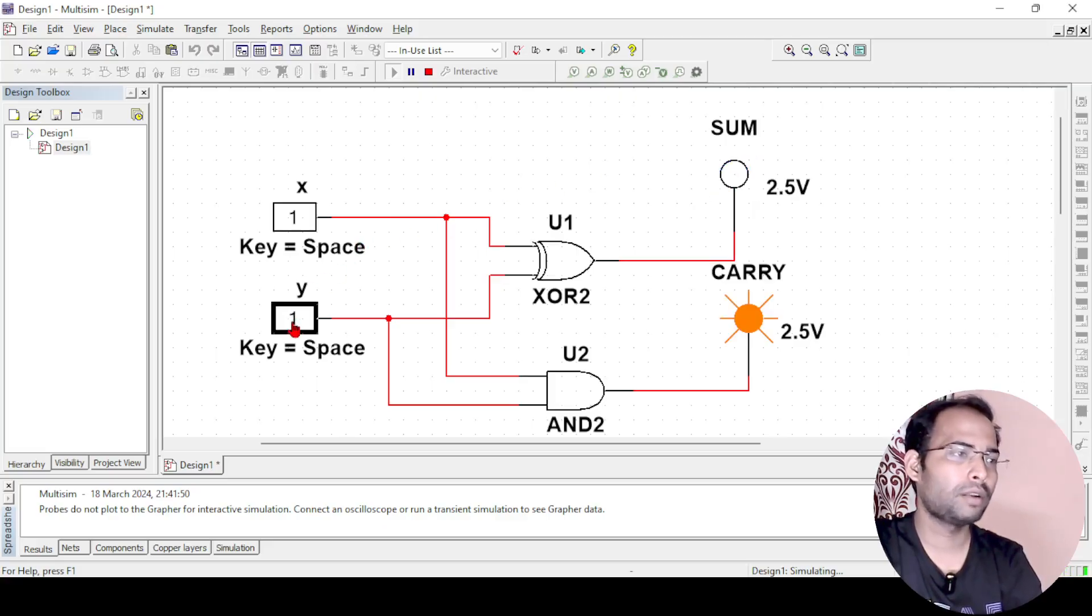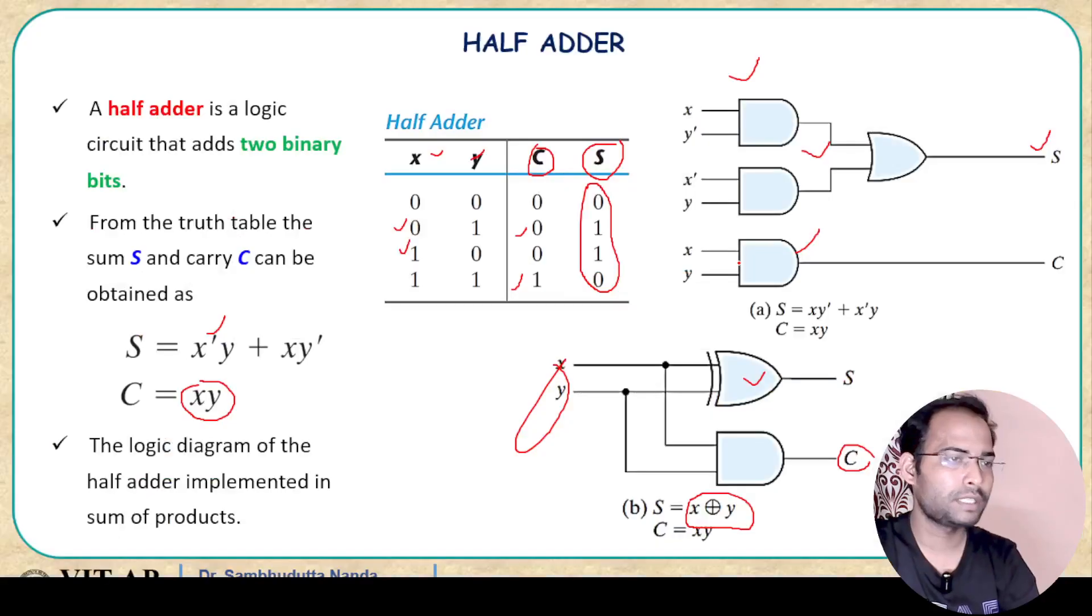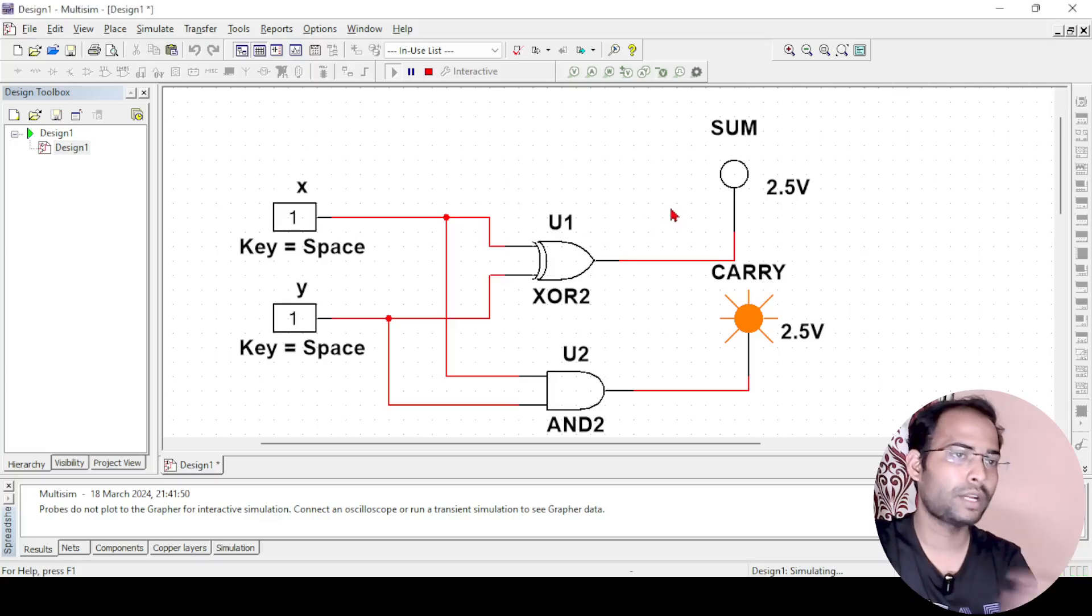Similarly, if I make it 1, 0 also then it is glowing. If I make it 1, 1 then you see sum is 0 and carry is 1 which is according to my truth table that for 1, 1 the carry is 1 and sum is equals to 0. So that is what we are getting here.